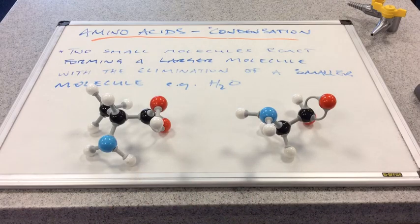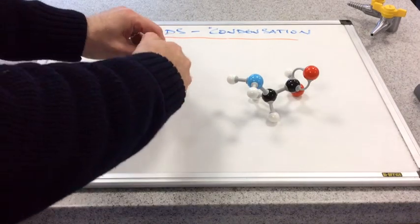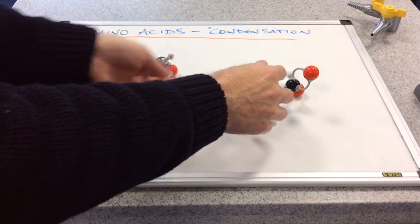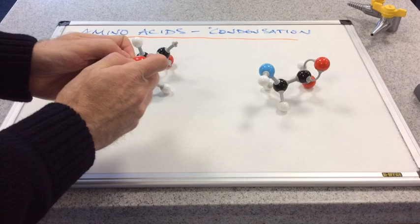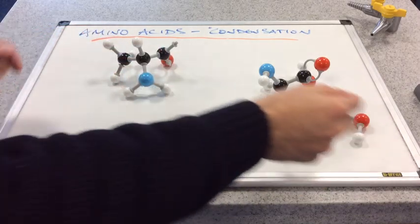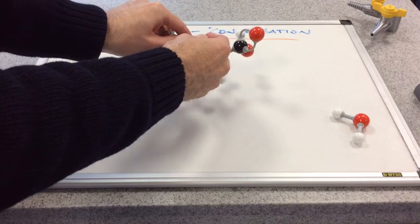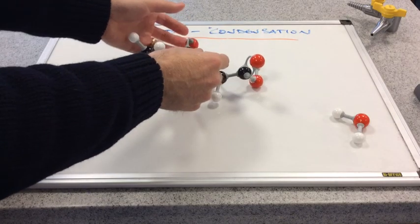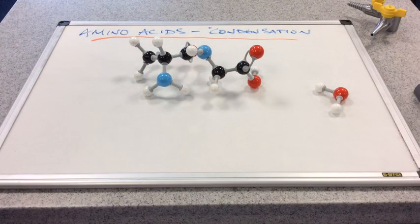And that's exactly what happens. So we'll take the OH group of this left hand amino acid and we'll take the hydrogen from the right hand amino acid. So there's the water molecule. And we'll join the two bits of the amino acids, what's left of them together and form our larger molecule. So there's the condensation reaction model there.